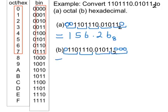Now we replace each of the four-digit binary numbers by its hexadecimal equivalent. Looking up the table, 0110 is hexadecimal six. Then 1110 is hexadecimal E. We put in our fractional point, and 0101 is five. Lastly, 1000 is hexadecimal eight. And that's the answer.